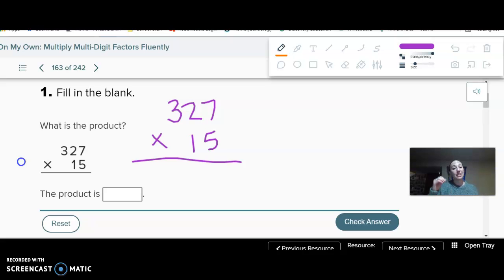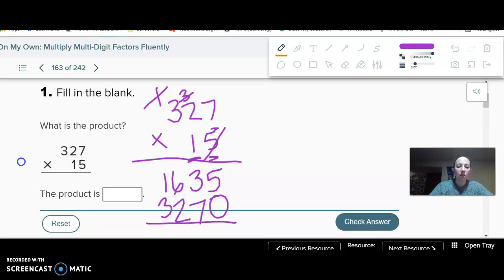Alright, I hope you got it. Again, I'm going to show the algorithm this time. If you tried the area model and didn't get it, I'm more than happy to take a look. Maybe on the next one, I will show you the area model. So 5 times 7 is 35. 5 times 2 is 10. Remember to add the 3, so 13. 5 times 3 is 15, plus 1 is 16. I'm done with my 5. I'm going to put a 0 there because I'm moving over to the 10s place. 1 times 7 is 7. 1 times 2 is 2. I love multiplying by 1. And then I add them. 5, 10, 8, 9, and 4. So 4,905.